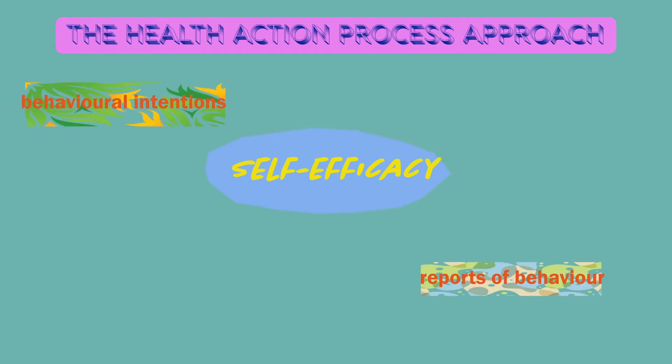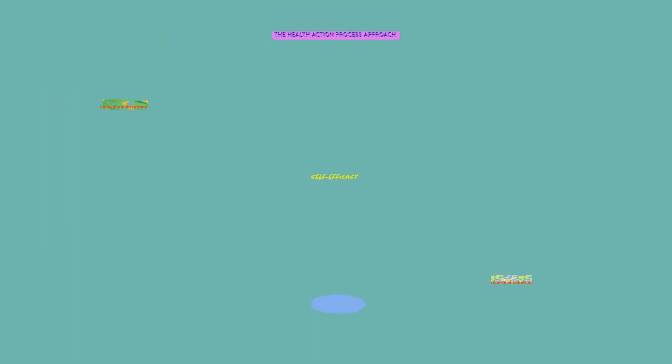Now let's talk about the second model: the health action process approach. The health action process approach is another stage model of health beliefs and health behavior, developed by Rolf Schwarzer following his review of the literature, which highlighted the need to include the temporal element in understanding beliefs and behavior. In addition, it emphasized the importance of self-efficacy as the determinant of both behavioral intentions and self-reports of behavior. The health action process approach includes several elements from social cognition models and attempts to predict both behavioral intentions and actual behavior.